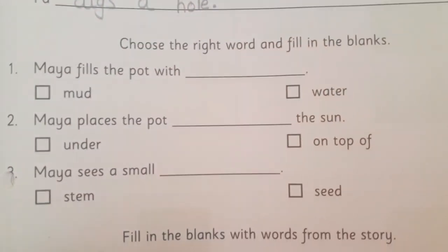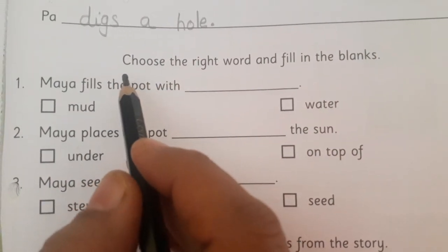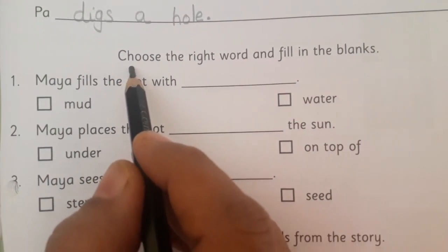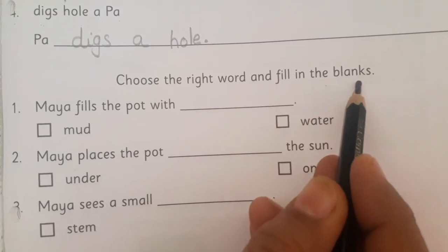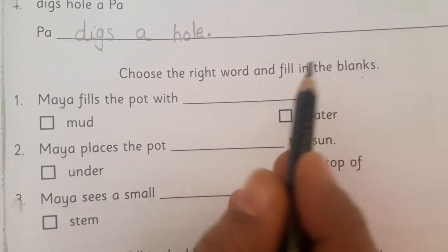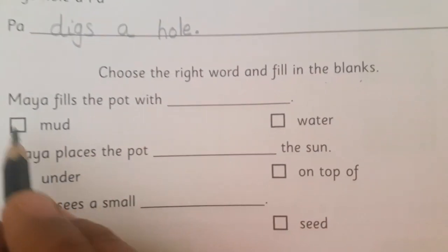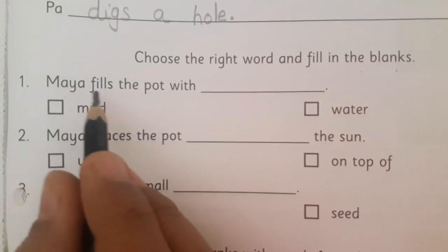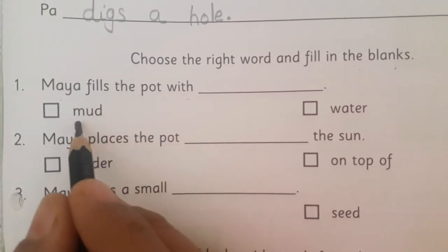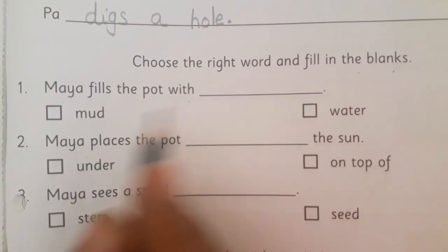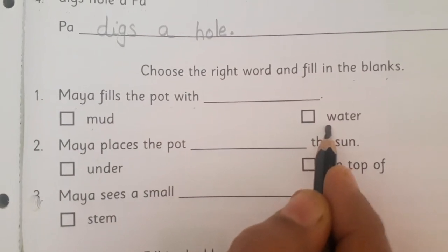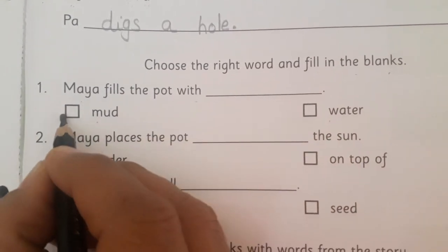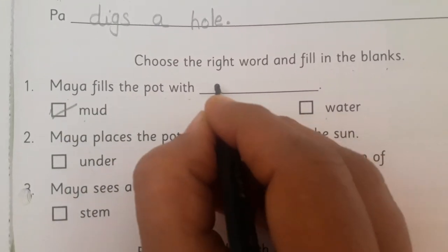Now the second exercise is about choosing the right word and filling in the blanks. First sentence: 'Maya fills the pot with dash.' The options are mud and water. What should we write? Yes — mud. So let's write mud.